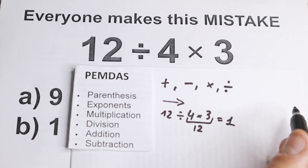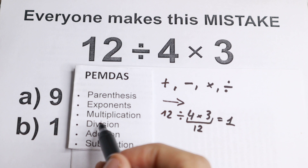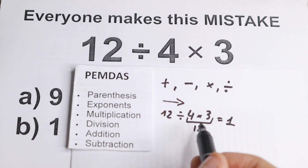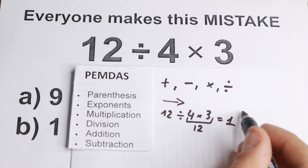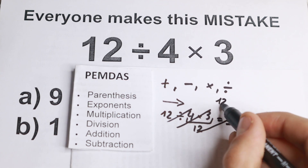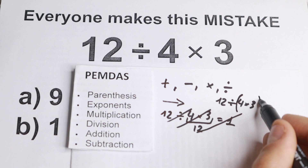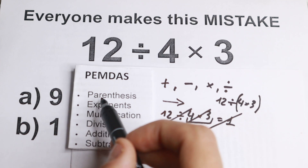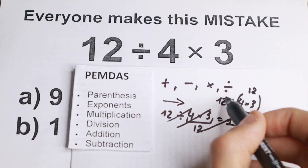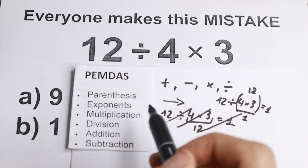Multiplication and division are like one group — it's not that multiplication comes before division or division before multiplication. We don't work that way; that answer of 1 is incorrect. That answer of 1 is correct only when you have parentheses, like 12 divided by (4 times 3). With parentheses, you do 4 times 3 first to get 12, then 12 divided by 12 equals 1. But in our case without parentheses, this is absolutely incorrect.